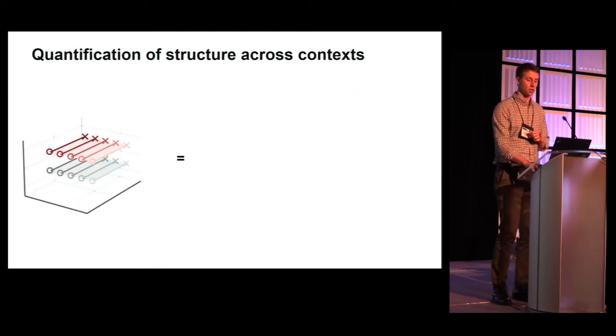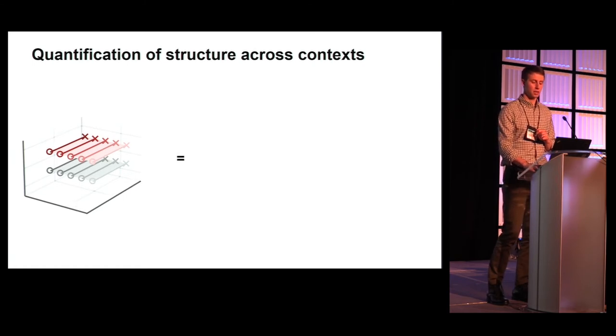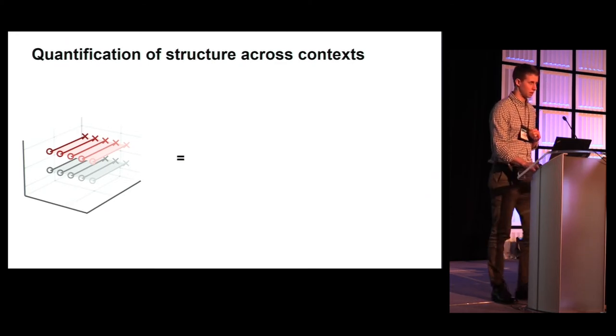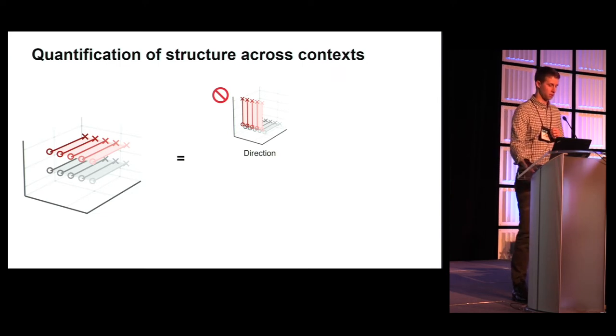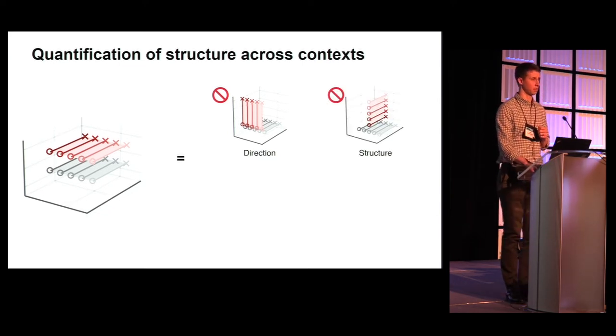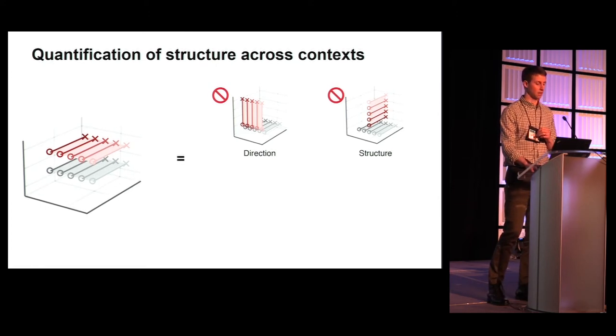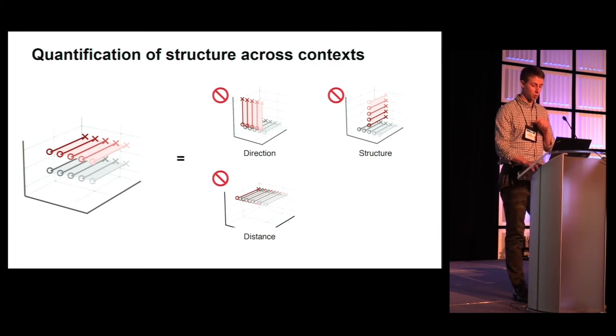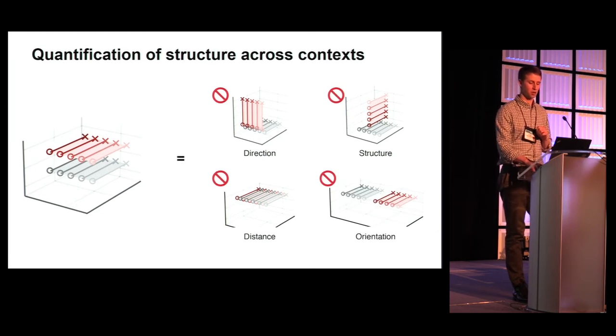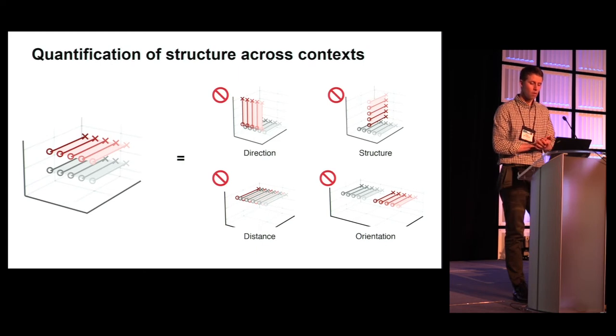Next, we used KINET to quantify the structure of neural trajectories across contexts, rejecting a number of alternative structures not consistent with our hypothesis. I won't get into the details of this analysis in the interest of time. First, we rejected the possibility that neural trajectories evolved towards qualitatively different endpoints. That is, we verified they traveled in the same direction. Second, we verified that the structure of trajectories was similar across contexts indicating that the effect of initial condition was generalized. Third, we verified that there was a meaningful separation between contexts between continuous structures generated within contexts and that this separation was not collinear with the separation between trajectories across contexts.